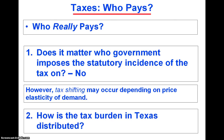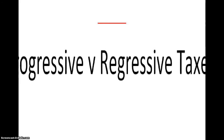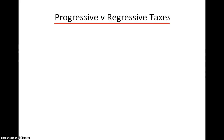Now we're prepared to address our second question: how is the tax burden in Texas distributed? Most analyses of the distribution of the economic burden of any tax make a distinction between a progressive tax and a regressive tax. This distinction is based on the relationship between an individual's or a household's income and the effective tax rate.